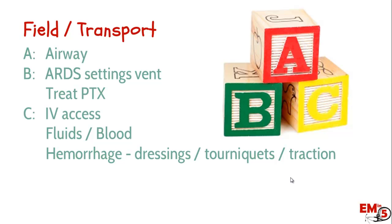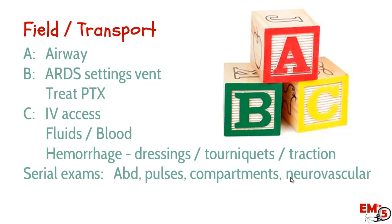They may have long bone injuries, amputations, significant wounds. So make sure you do appropriate dressings, place tourniquets as needed, and put limbs into traction. The last thing that's really important is to keep doing serial exams on these patients. Keep examining their belly, keep checking their pulses, look for evidence of compartment syndrome, and keep doing neurovascular checks — because they may have some occult injuries that you could catch early if you keep doing serial exams.